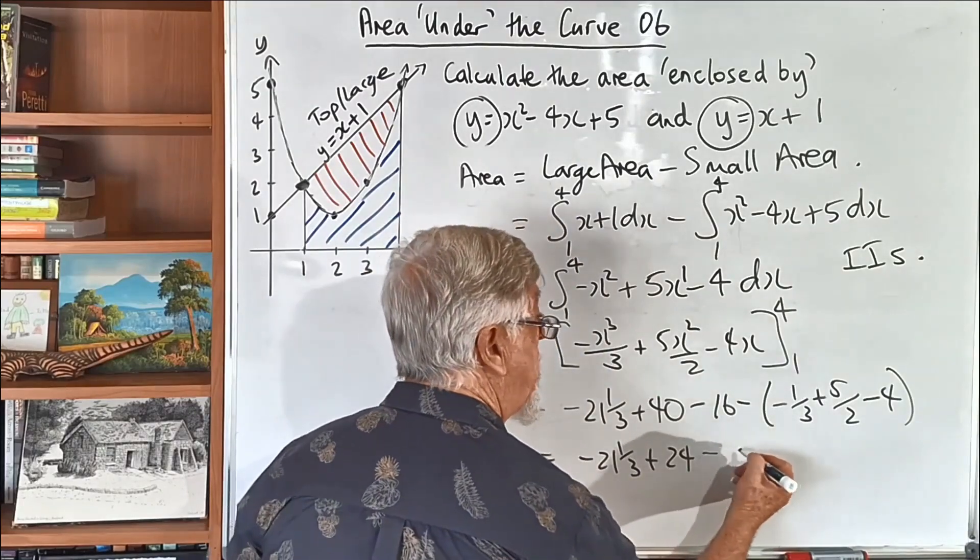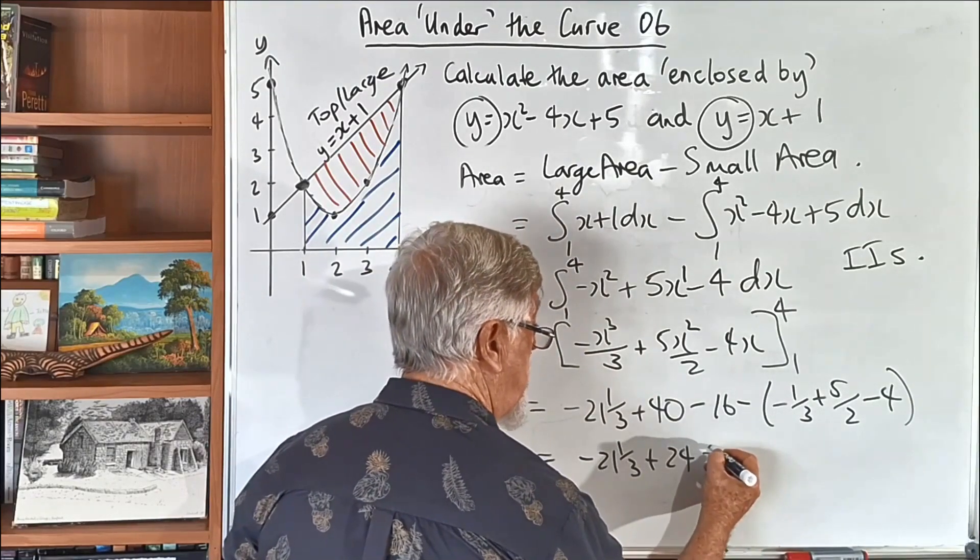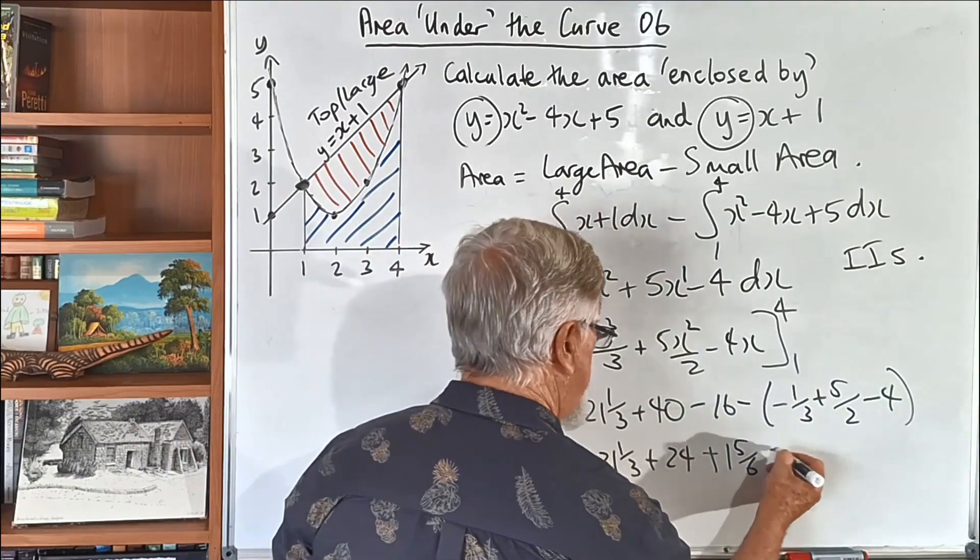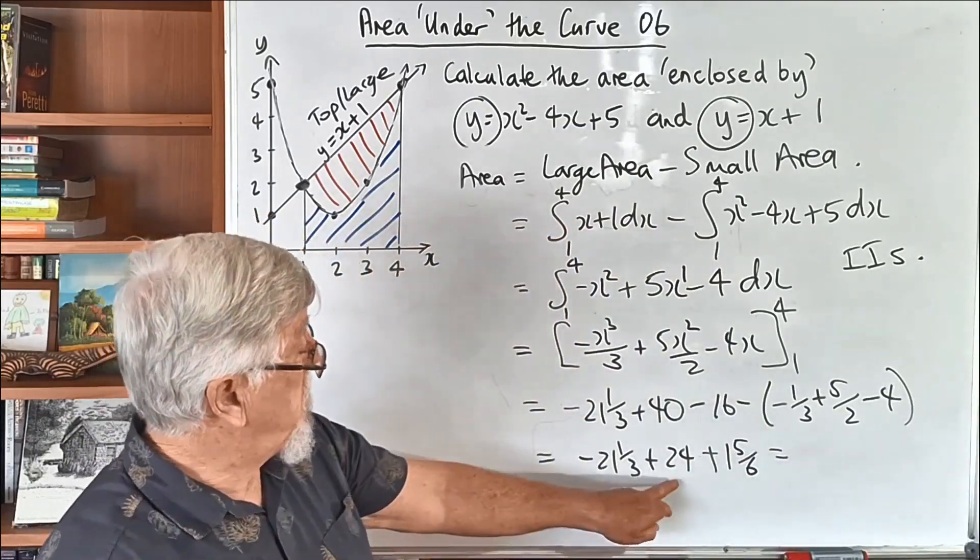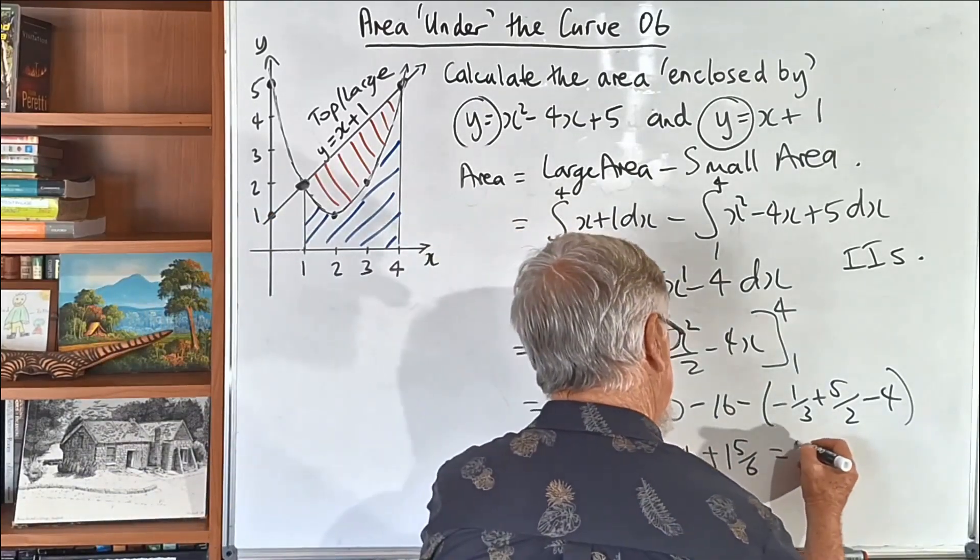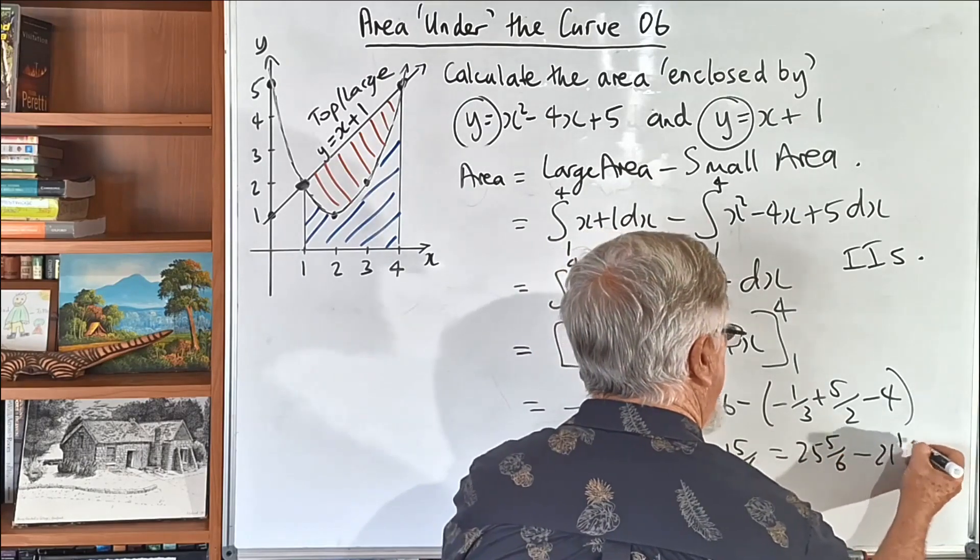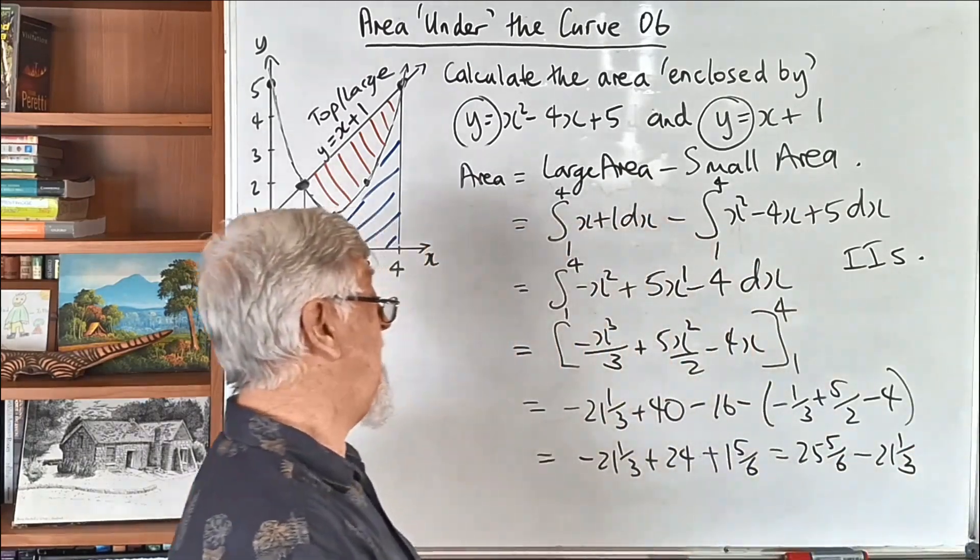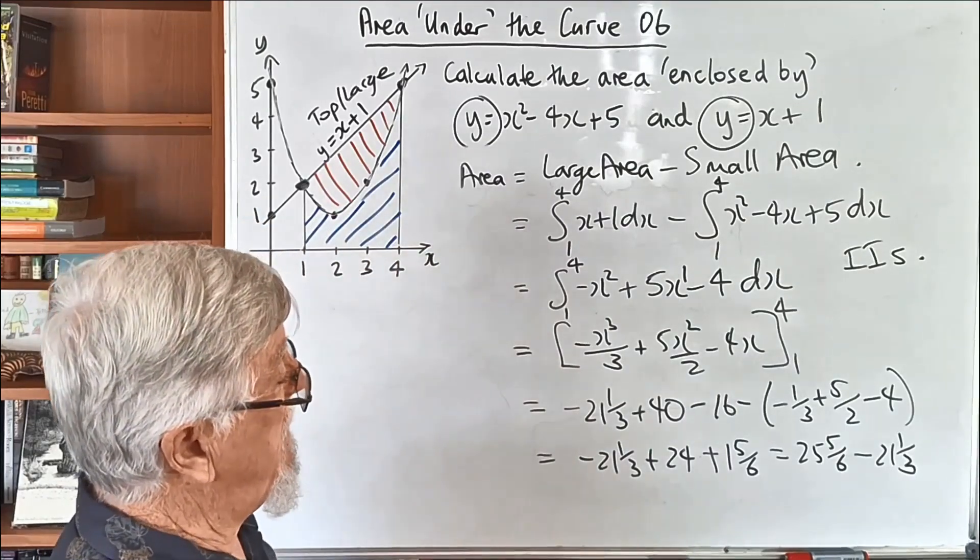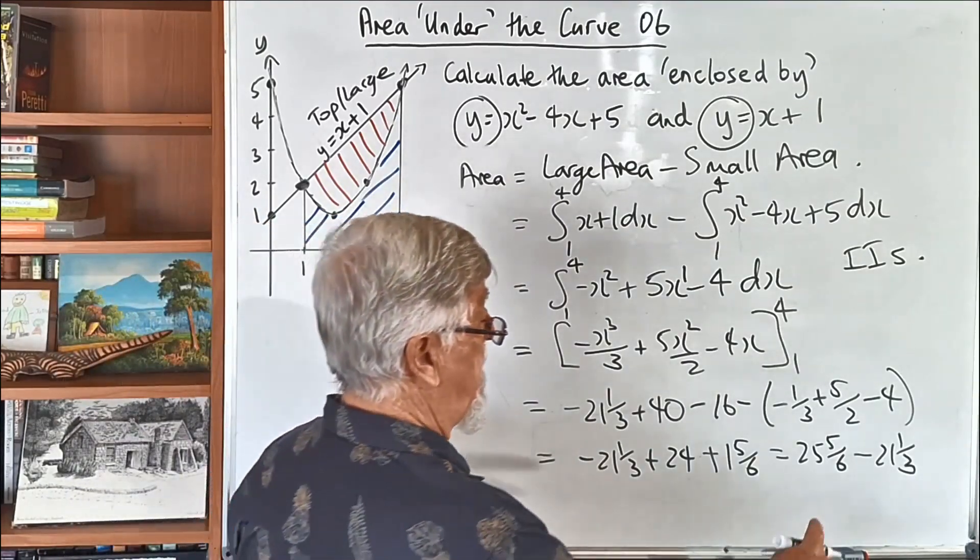So that turns out to be minus 1 and 5 sixths, so I can go plus 1 and 5 sixths, so actually all we've got is 25 and 5 sixths, minus 21 and a third, and I'm going to calculate that in my head. Can I do that in my head? Yes, I can, because I'm just going to go, 25 take 21, 4,